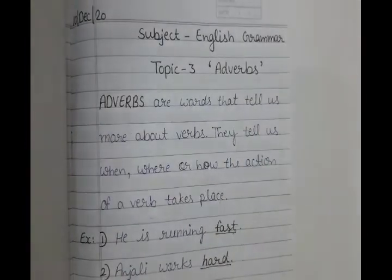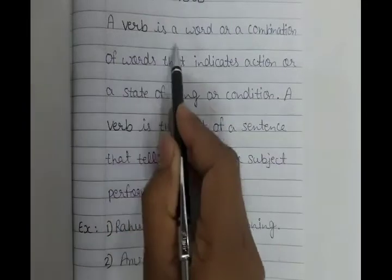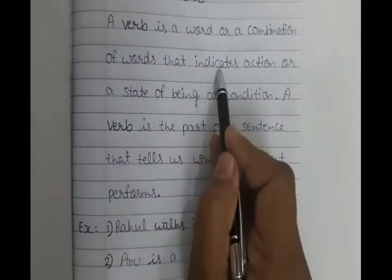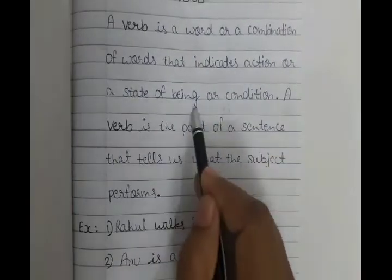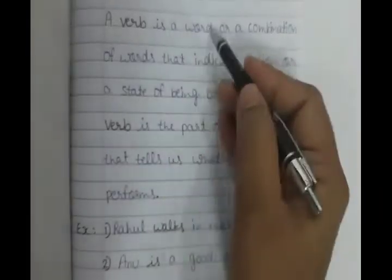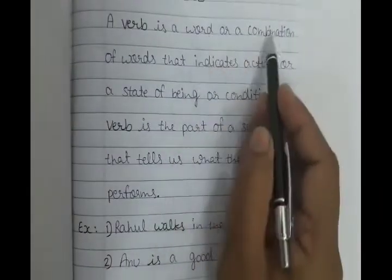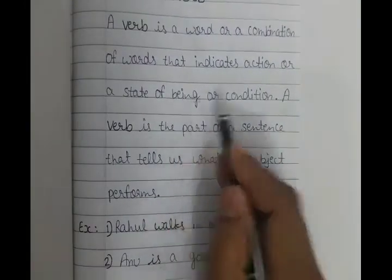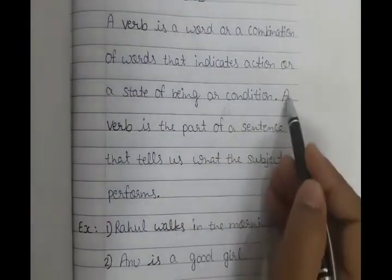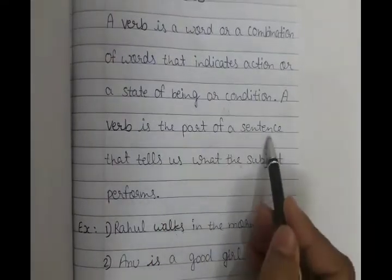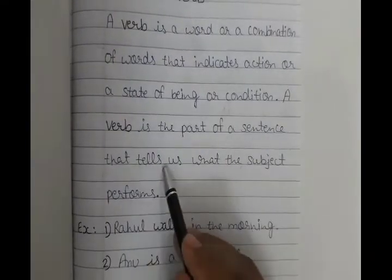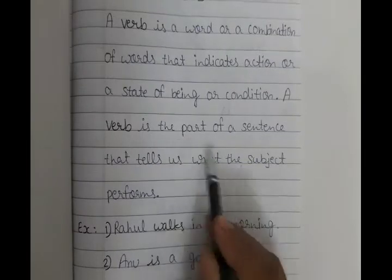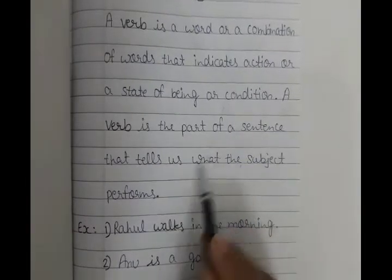First, let's find out what is a verb. A verb is a word or a combination of words that indicates action or a state of being or condition. Verb एक word हो सकता है या फिर बहुत सारे words का combination हो सकता है, जो indicate करता है action को, state of being को और condition को. A verb is the part of a sentence that tells us what the subject performs. Verb एक sentence का पार्ट होता है जो बताता है कि subject sentence में क्या करता है.